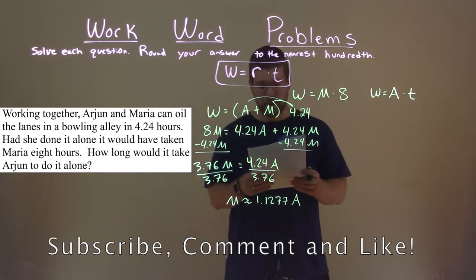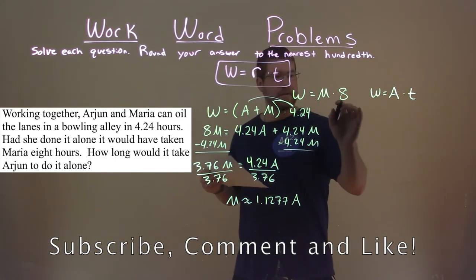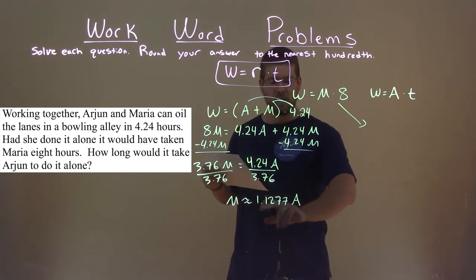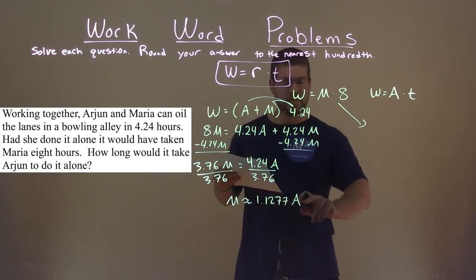So how does that help us here? Well, what we're going to do is we're going to take this right here, and we're going to substitute, instead of M, this decimal, 1.1277A.